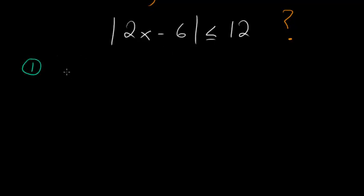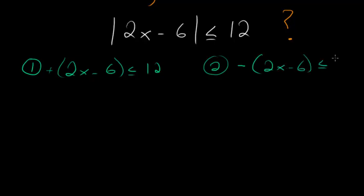So the first case is where 2x minus 6 is positive, it's less than or equal to 12. The second case is where we have the negative version of 2x minus 6 less than or equal to 12. If we solve both of these and then combine the solutions, that will give us the total solution for this equation.